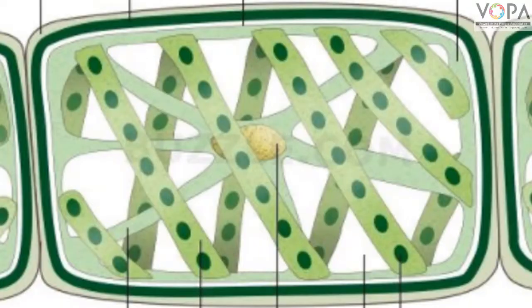The solution is unicellular or multi-cellular, but they are microscopic. They have a soft, fiber-like light body. We have to find a Spirogyra.